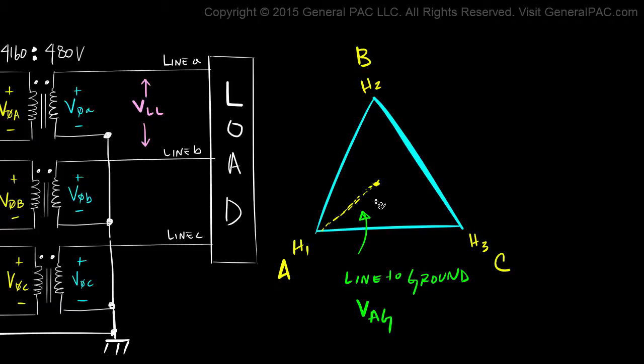Okay, which means that if we put another dashed line here, this dashed line would represent the VBG and then this dashed line would represent the VCG.